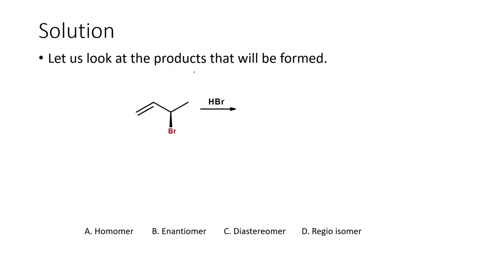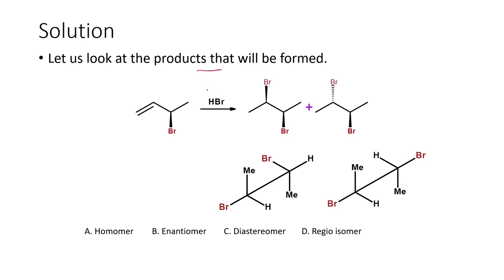Let us work out the solution. According to the Markovnikov rule, the negative part of the addendum attaches itself to the most substituted carbon atom. Here we have hydrogen being added to the terminal carbon atom and bromine added to the internal carbon atom. Since we already have a stereogenic center, the second incoming bromine can be arranged in the cis orientation — both facing the same side — that is one product, or in the trans orientation, which is another product.